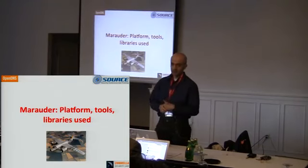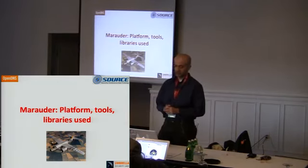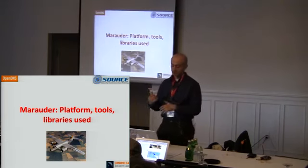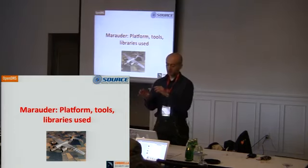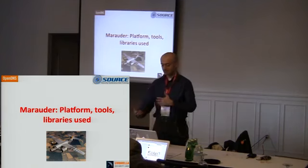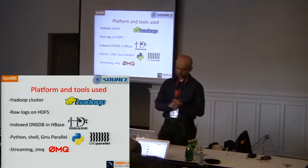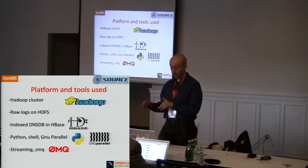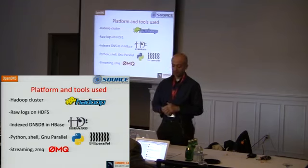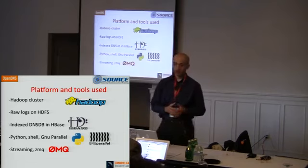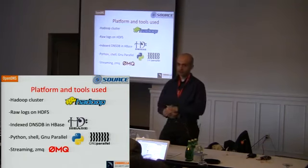Back to the Marauder system and the platform details. The previous part was about exploring ASN and IP space, finding hotspots, and once you get IP ranges, applying the scanning system to get new domains. In the lab we use Hadoop. Raw logs are on HDFS, and the indexed passive DNS is in HBase. For my work I used Python, shell, and GNU parallel. Recently, since we introduced the streaming DNS, we use ZeroMQ to get the real-time stream.